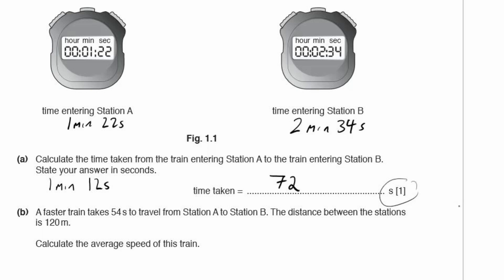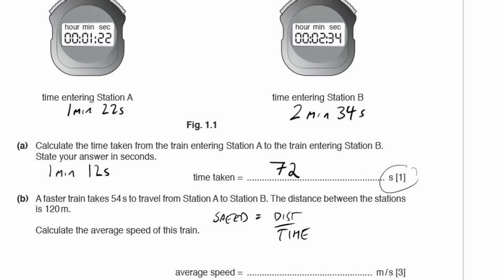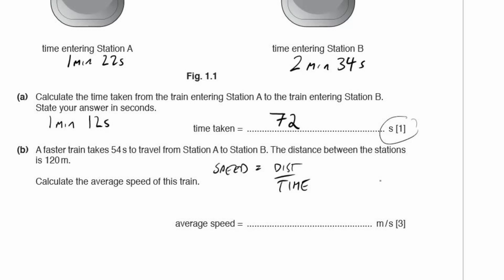Part B: a faster train takes 54 seconds to travel from station A to station B. The distance between the stations is 120 metres. Calculate the average speed of this train. First things first, we're going to put down the equation we need to use: speed equals distance divided by time. Always write down your working out for these papers — there will be marks available for it. That gives us 120 metres divided by 54 seconds, which gives us a value of 2.2 metres per second.